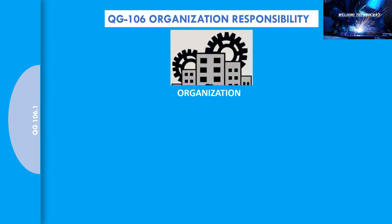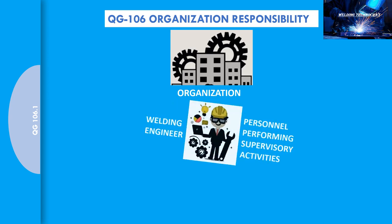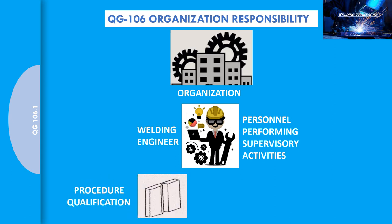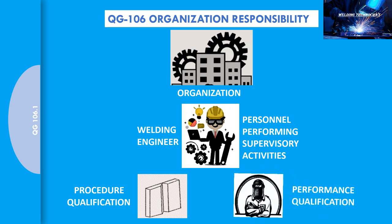Consider a heavy manufacturing organization where welding is carried out. The organization has compliance with the requirement of QG 106 organization responsibility to designate a personnel for performing supervisory activities — a welding engineer with the responsibility of conducting welding procedure qualification tests as well as welder or welding operator performance qualification tests.